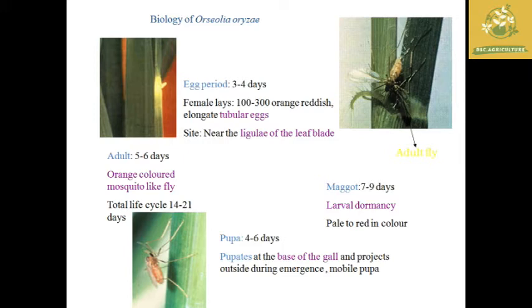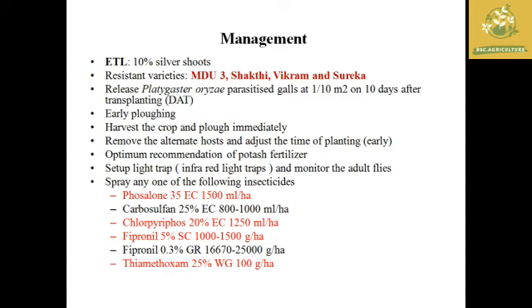The pupal stage takes 4 to 6 days; the pupa is found at the base of the gall and projects outside during emergence — these are known as mobile pupae. The adult lives for 5 to 6 days. The total life cycle is around 14 to 21 days. The adult is an orange-colored mosquito-like fly. The economic threshold level is 10% of silver shoots.